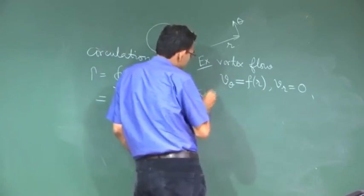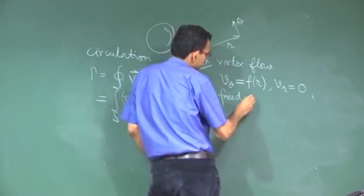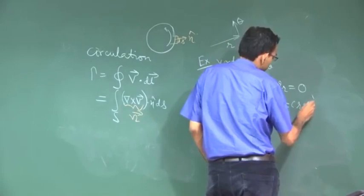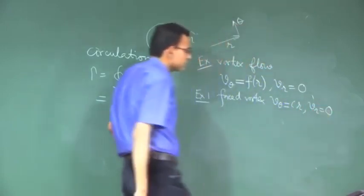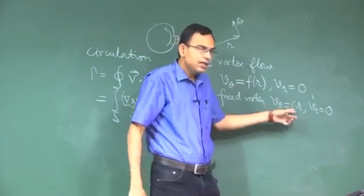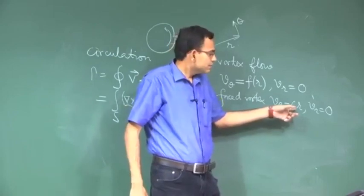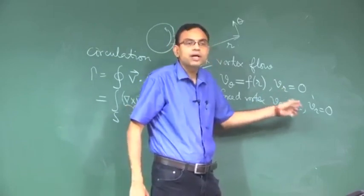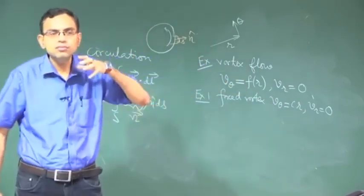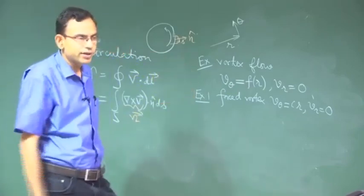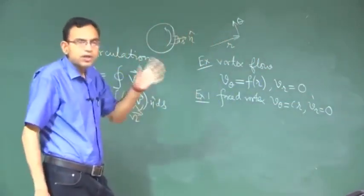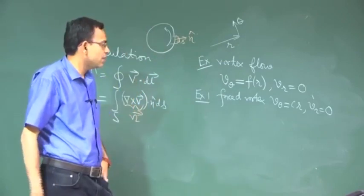Example 1: we consider the forced vortex, where v theta equals C times r. You can see that this looks like the basic expression v equals omega r — it is like a rigid body type of motion that you see in traditional mechanics. V equals omega r and v r equals zero. This is like rigid body rotation of fluid.